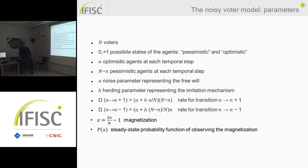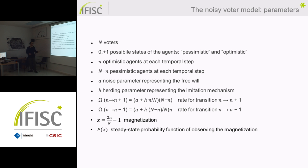The classical noisy voter model, or Kinman model, has been studied for economic purposes and is one of the most historically important applications. In this system, noisy voters make a binary choice — they can be in either state zero or plus one, for example pessimistic and optimistic agents — with n optimistic agents and N minus n pessimistic agents at each temporal step. The two fundamental parameters are A, representing the free will or noise parameter, and H, representing the herding or emulation behavior.